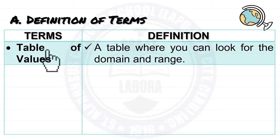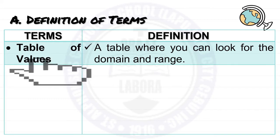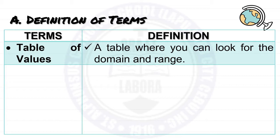Next is the table of values. The table of values is a table where you can look for the domain and range.